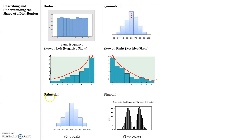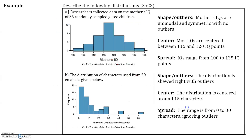Unimodal means we have one mode. Bimodal means we have two modes or two peaks. We can also have multimodal, which means we have multiple peaks. Now we're going to use these to describe our distributions.